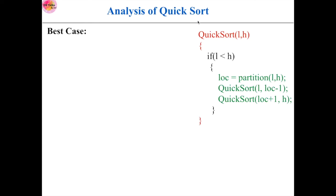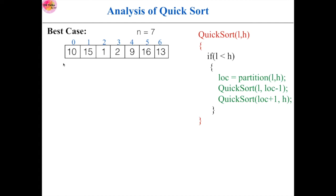With this code snippet, let us analyze this quicksort algorithm and find out its time complexity. One important thing is it is using recursion and divide and conquer method, and also it is using a partition algorithm. What this partition algorithm is doing is it will return the correct location of the pivot element, and then based on this location, these two function calls will split the given array into two sub-arrays — left and right sub-arrays.